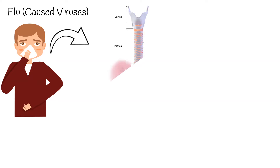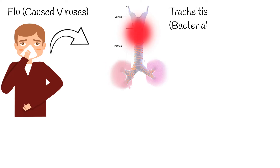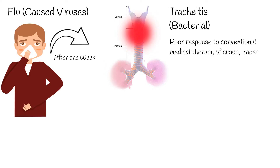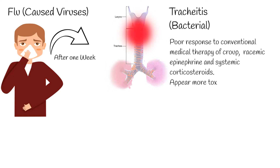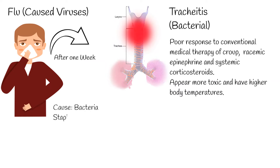Children with bacterial tracheitis usually present with a history of a viral respiratory illness such as croup. Rhinorrhea, cough, fever, and sore throat are frequently reported symptoms that may be present for up to one week before presentation. An important clinical distinction from the more common entity of viral croup is the poor response to conventional therapy, including racemic epinephrine and systemic corticosteroids. Children with bacterial tracheitis also generally appear more toxic and have higher body temperatures.